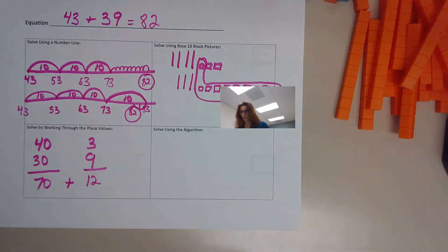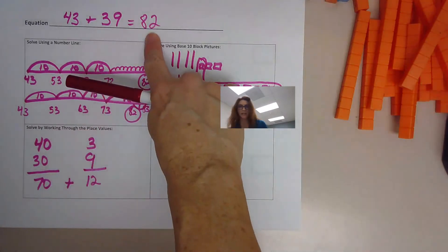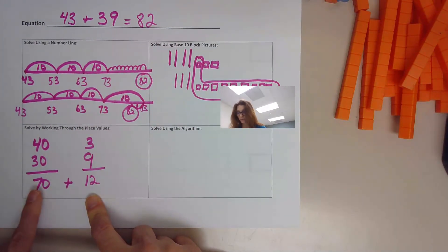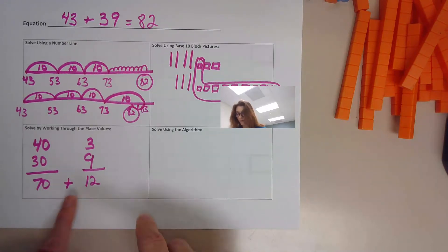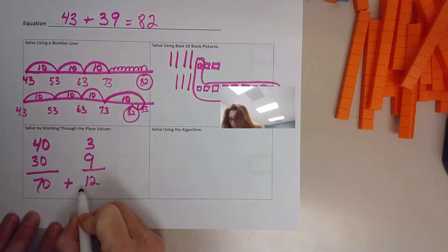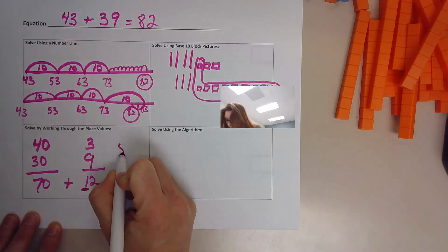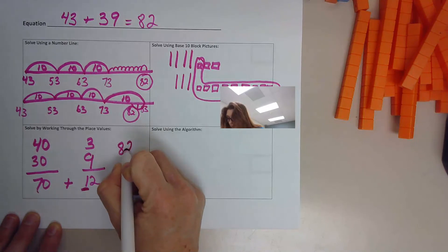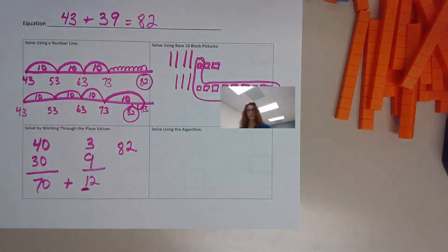that's not 82. We know our answer has to be 82 because we have to put these together first. So what's 70 plus 12? 70 plus 10 is 80. Zero plus two is two. Okay. That's one way you can solve it through working through the place values.